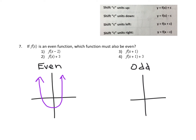An odd function, by contrast, is one where if you rotate the graph 180 degrees — basically flip it upside down — it would look exactly the same. Now let's think about an even function. Looking at the answer choices, they're shifting the function in various ways.